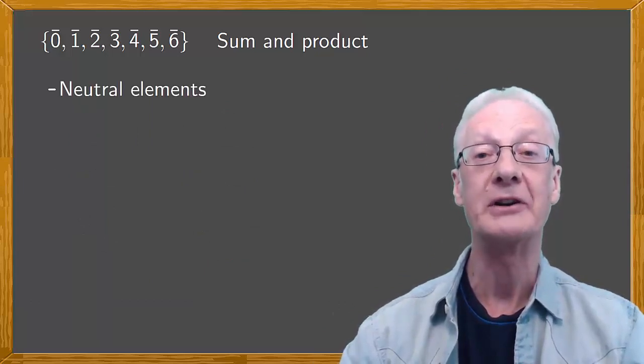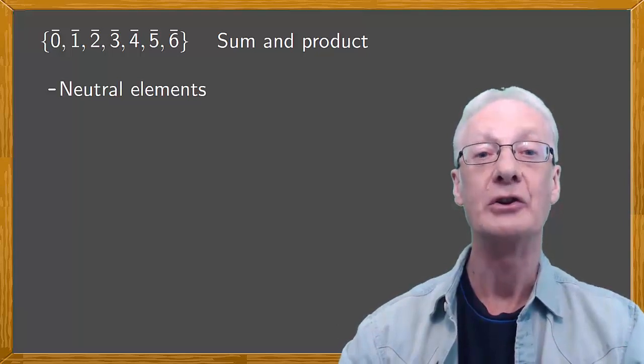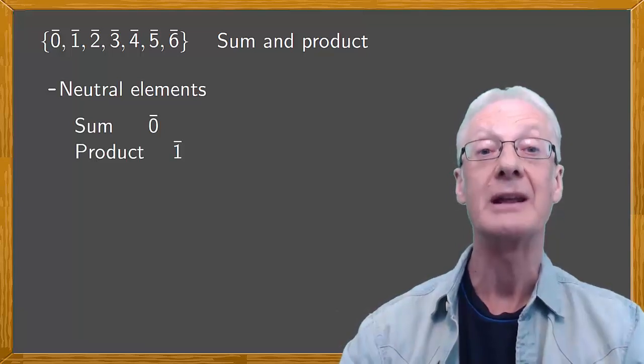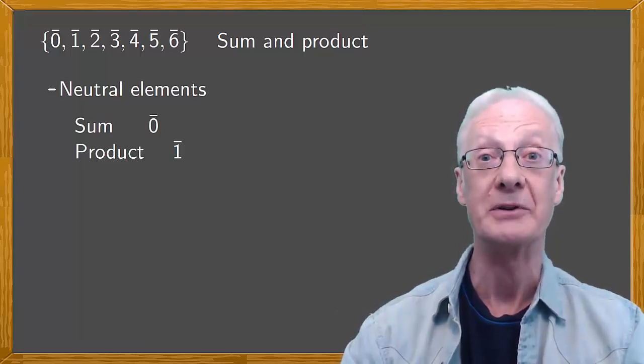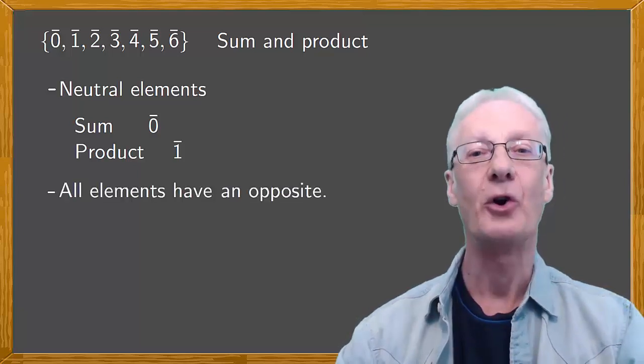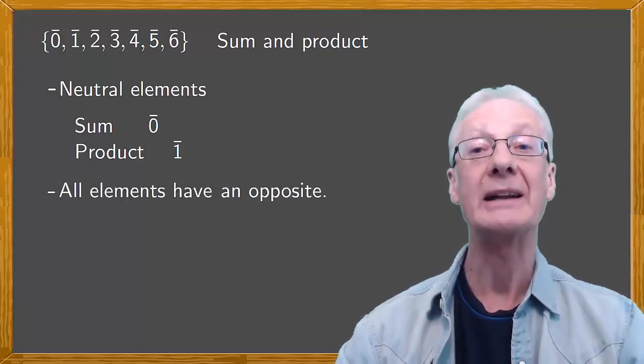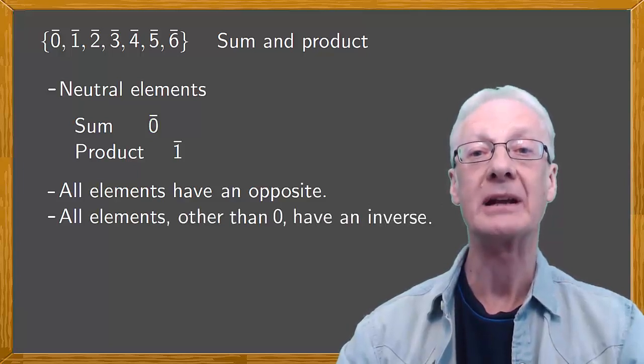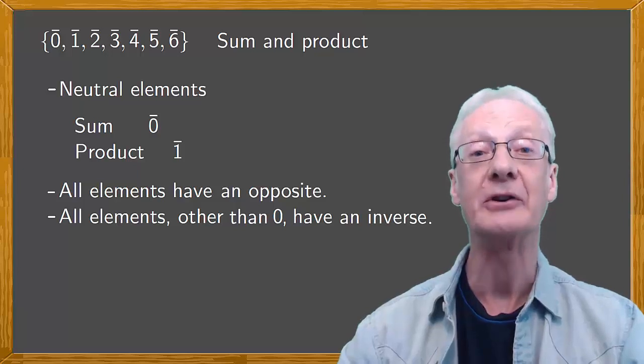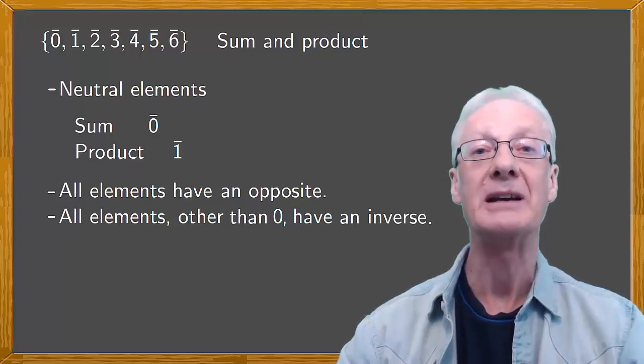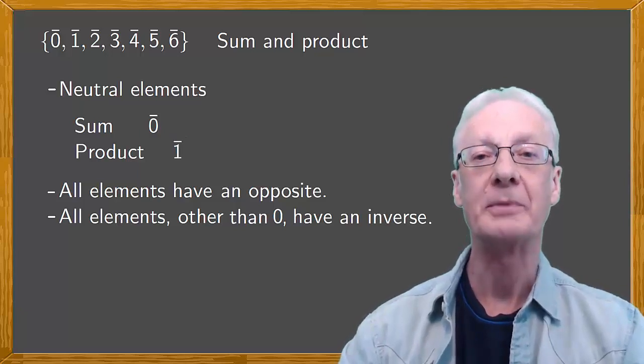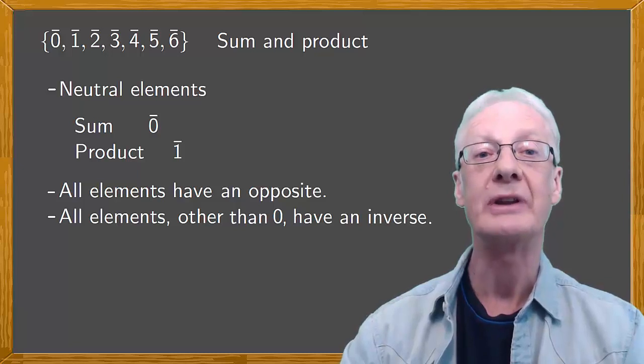Both of these operations have neutral elements, elements which, when they're operated upon, leave the result the same. The neutral element of the sum is zero, and the neutral element of the product is one, exactly as in the case of ordinary arithmetic. All elements also have an opposite. When adding opposites, you get zero. All elements in modular arithmetic, other than zero, also have an inverse. When you multiply a number by its inverse, you get one.